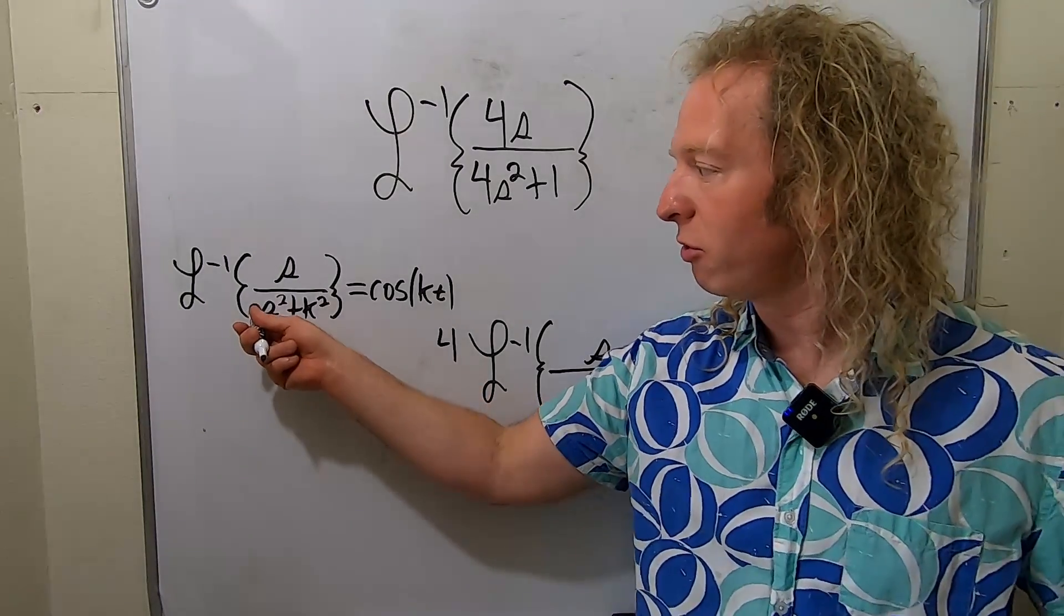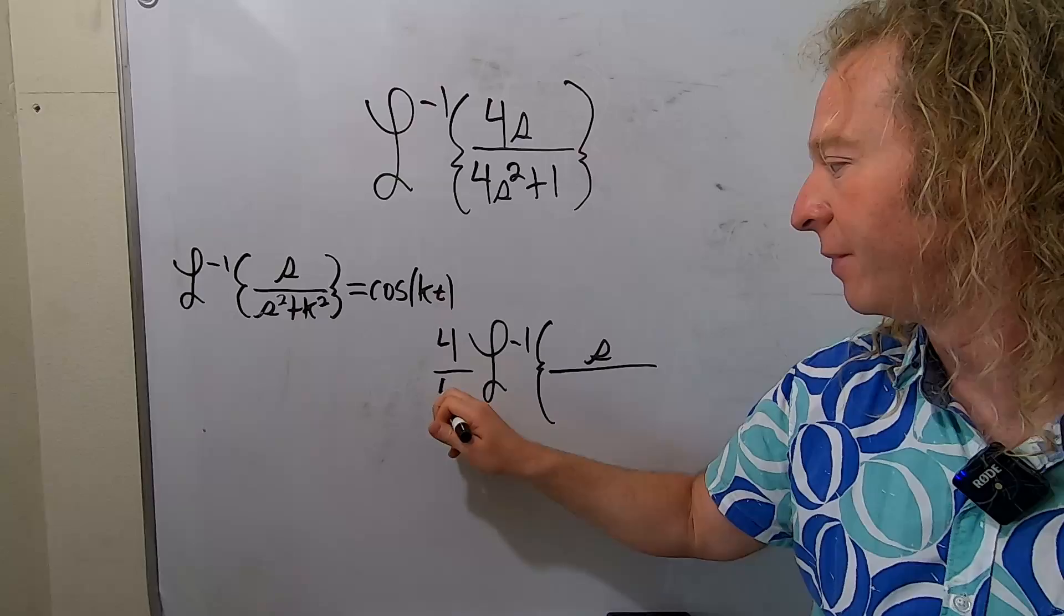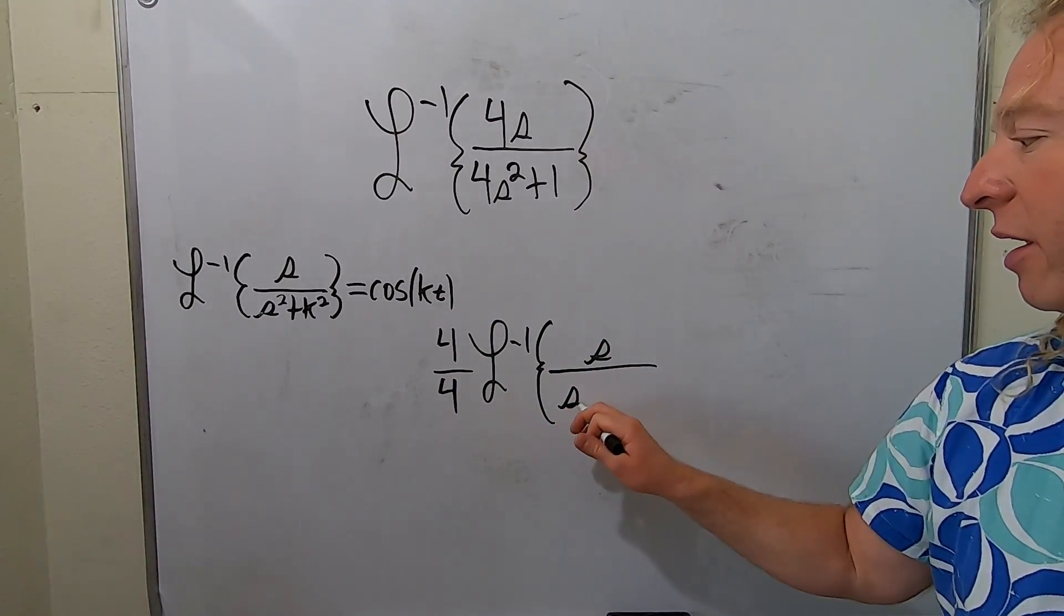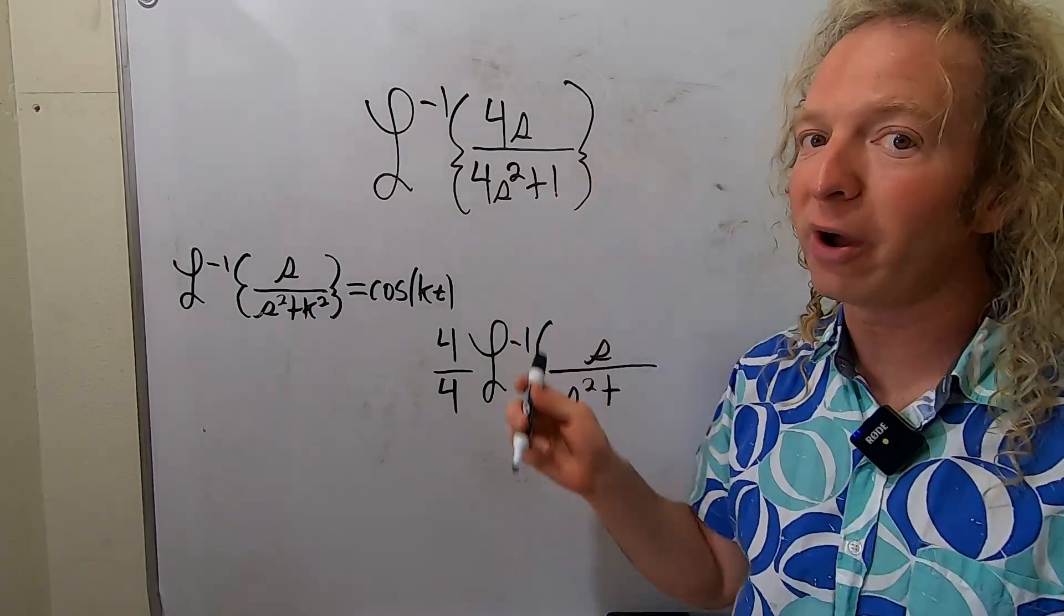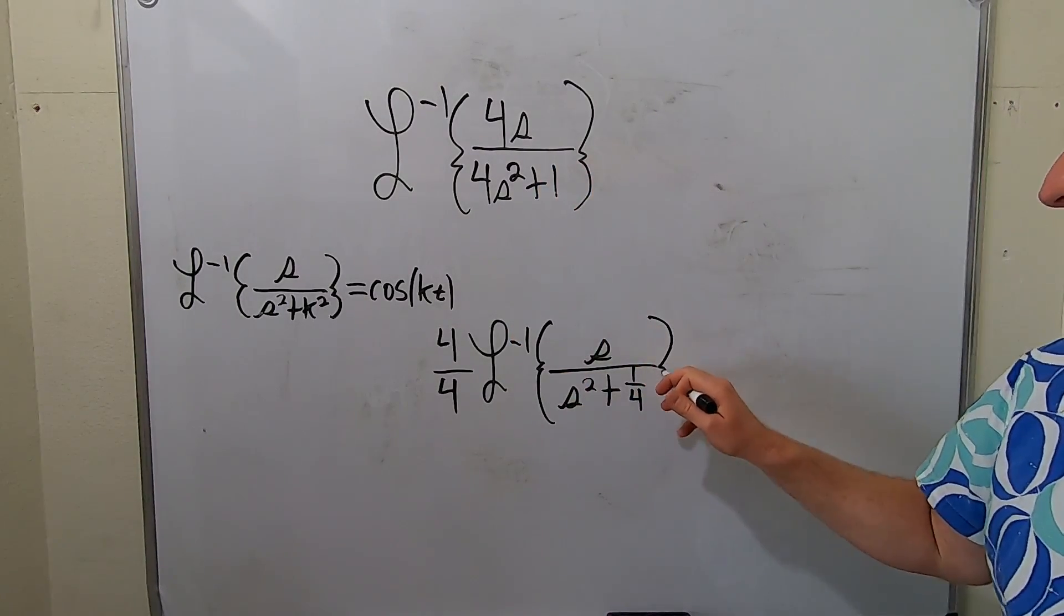Also, there's no coefficient here on the s in this formula. So we need to pull the 4 out from the bottom. So when you pull that 4 out from the bottom, you're going to get s squared plus, and then pulling out a 4 from the 1 is going to give you 1 fourth. That's the clever step.